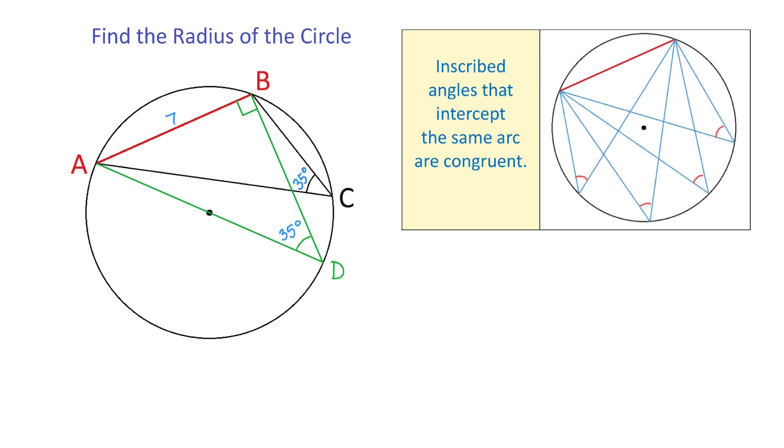Then we can use the sine function to find the hypotenuse AD. So we will write that sine of 35 degrees equals the opposite side of 7 units divided by the hypotenuse AD. From here AD equals 7 over sine